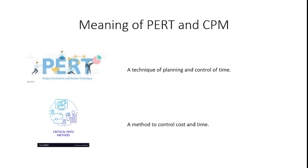PERT means a technique of planning and control of time for completing the project — how many days the project is to be completed, what is the commitment date we can give to the customer. We can analyze this through PERT. CPM, the Critical Path Method, is used to control cost and time with respect to the project. Every person involved in Project Management should be aware about PERT and CPM and how to solve PERT and CPM problems. This presentation is utilized as PERT and CPM in a Mathematical Evaluation.